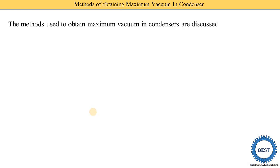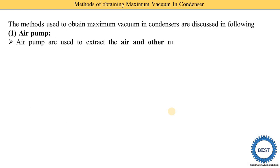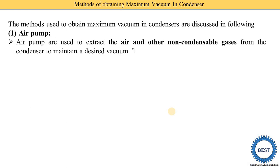The first method is by using the air pump. Air pumps are used to extract the air and other non-condensable gases from the condenser to maintain the desired vacuum. By using the air pump we remove the air and other non-condensable gases from the condenser and we are able to make the vacuum in a condenser.